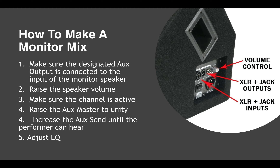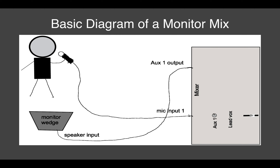So here's how you make a monitor mix. Again, this is a very basic description — it can get crazy depending on how large the act is. First, you want to make sure that a designated aux output is connected to the input of a monitor speaker that's in front of the performer. Then you're going to raise the speaker volume so you can hear when you start sending some signal, and make sure that the channel is active. Once you've done that, you can raise the aux master to unity, and then start increasing that aux send until the performer can hear it. Once the performer can hear it, you can adjust EQ to taste.